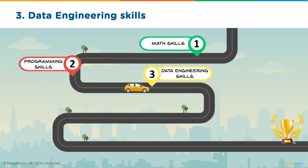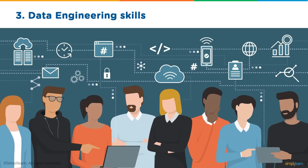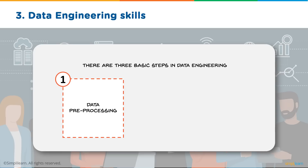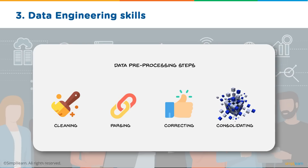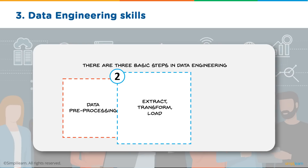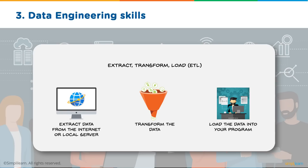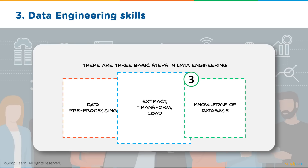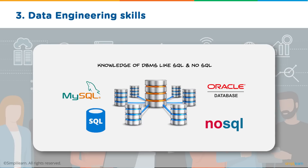Your next step is to get yourself some data engineering skills, which are important as they help you analyze and process your data as soon as you get it. There are three major steps: first, data pre-processing — cleaning, parsing, correcting, and consolidating the data. Then ETL, or extract, transform, and load — you need to know how to extract data from the internet or a local server, transform it into an accepted format, and load it into your program. Finally, you need knowledge of database management software, including MySQL, Oracle database, and NoSQL.